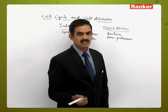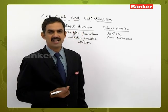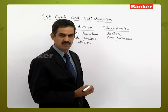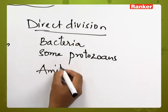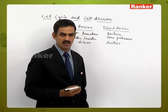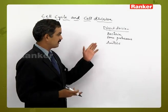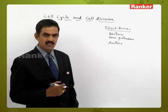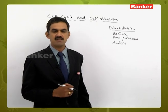In lower organisms like bacteria and some protozoans like Paramecium, the nucleus divides directly without the formation of a spindle apparatus. That is called a direct type of division. This process of division is called amitosis.